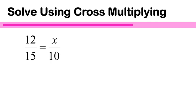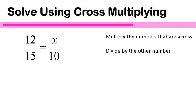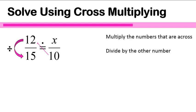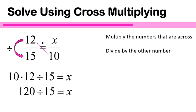In this question, we're going to solve 12 over 15 is equal to x over 10. We'll follow those same steps: multiply the numbers that are across from each other and divide by the other number. 15 is across from x, so those are not the numbers we use. We are looking at the 10 and the 12 — those are the numbers across from each other. We'll multiply those and then divide by the remaining number, 15. So it looks like this: 10 times 12 divided by 15. 10 times 12 is 120, and 120 divided by 15 is equal to 8. So x equals 8.